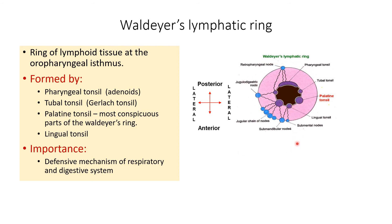The lymph nodes draining Waldeyer's lymphatic ring include the retropharyngeal lymph nodes draining into the pharyngeal tonsil, the tubal group of nodes, the jugulodigastric group connected to the palatine tonsil and tubal tonsil, the jugular chain of lymph nodes connected to the palatine tonsil, and the submandibular and submental lymph nodes connected to the lingual tonsils.